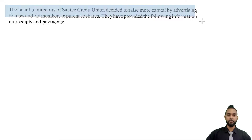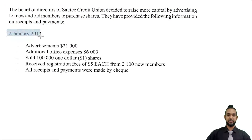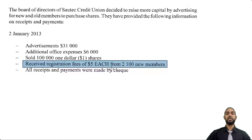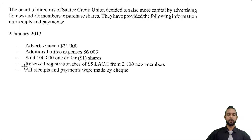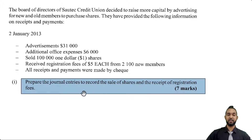Part B reads: the board of directors of South Tech Credit Union decided to raise more capital by advertising for new and old members to purchase shares. They have provided the following information on receipts and payments. On the 2nd of January 2013, we have advertisements $31,000, additional office expenses $6,000, sold 100,000 shares at $1 each, and received registration fees of $5 each from 2,100 new members. All receipts and payments were made by cheque. The first thing they want us to do is prepare the journal entries to record the sale of shares and the receipt of registration fees — seven marks.